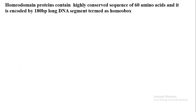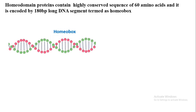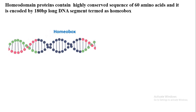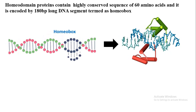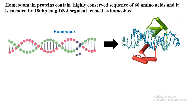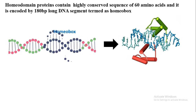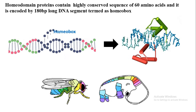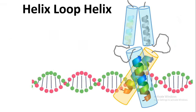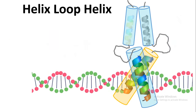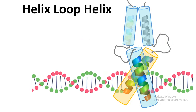Another important class of transcription factors is the homeodomain-containing transcription factors, which are highly conserved with 60 amino acids and encoded by a 180 base pair long DNA segment termed the homeobox. These also have a similar helix-turn-helix structure, but instead of two helices, they have three helices. These homeodomain-containing transcription factors are very important for segment polarity and patterning, from a fly to a mammalian embryo.